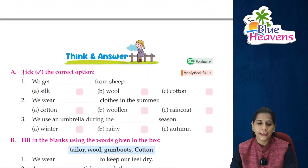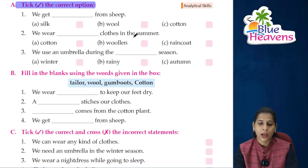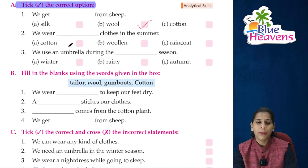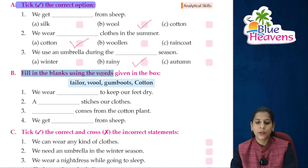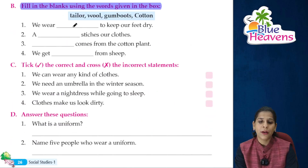Let's do the exercises. Choose the correct option: We get blank from sheep — answer: wool. We wear blank clothes in summer — answer: cotton clothes. We use an umbrella during the blank — answer: rainy season. Fill in the blanks: We wear blank to keep our feet dry in the rain — answer: gum boots.